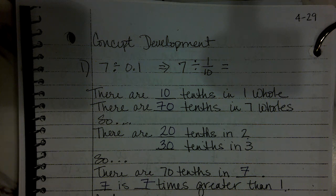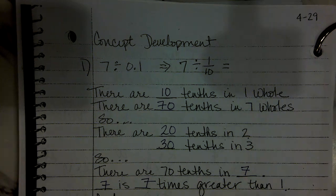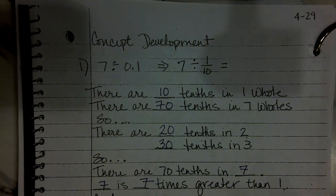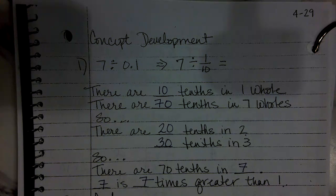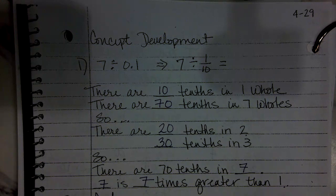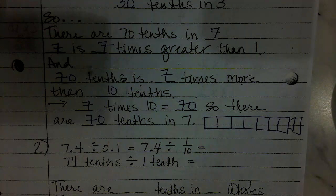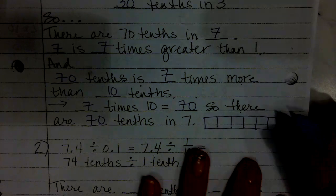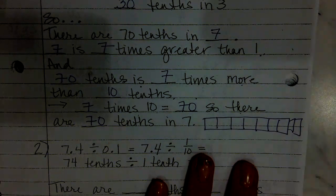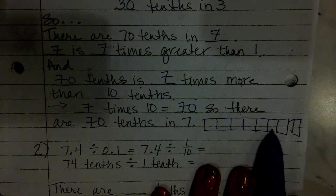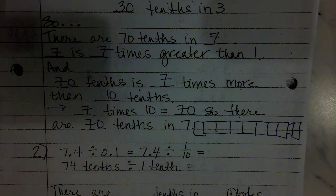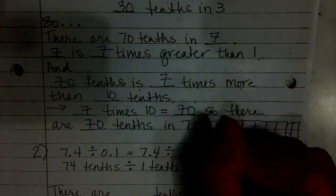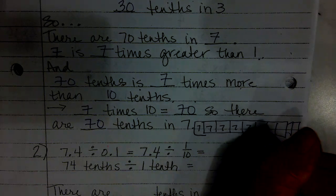It's seventy because you can think of a tape diagram. If you think about a tape diagram with ten parts, it has ten parts and one part is seven. So it's seven times ten.